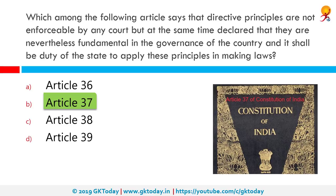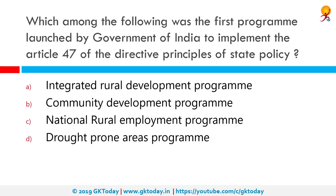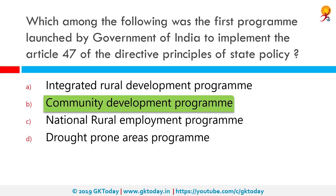The reason directive principles are not compulsory is that states may not have the resources to implement all of them. Which was the first program launched by the Government of India to implement Article 47 of the Directive Principles? The correct answer is the Community Development Program. Article 47 directs the state to raise the level of nutrition and the standard of living and to improve public health, and in particular to bring about prohibition of intoxicating drinks and drugs injurious to health.